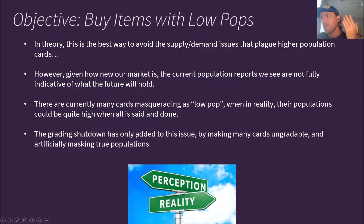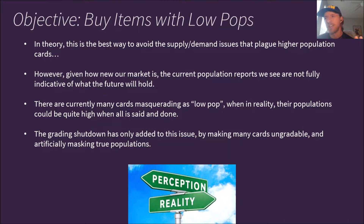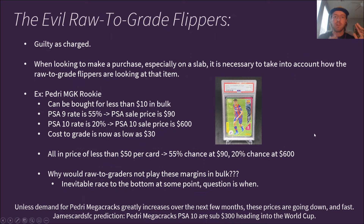This has been exacerbated by the grading shutdown, which has artificially masked true populations. By 'ungradable' I mean: you might have 20 or 30 Adiemi stickers but can't justify grading at $100. At $50 it's still risky if you get a PSA 9. At $30, where a PSA 9 might be $20-30 and a PSA 10 is $90, it starts to make more sense — and then more get graded and the pop report starts to get more real.